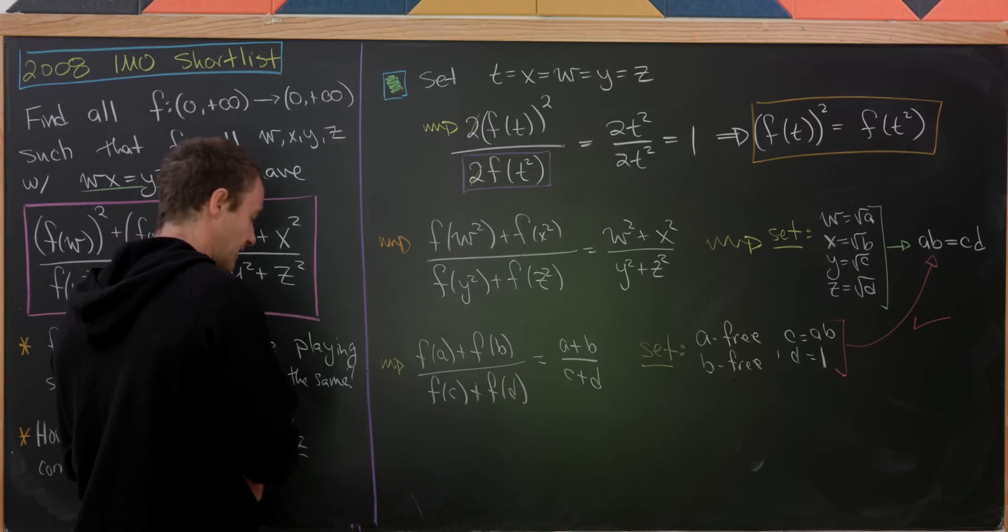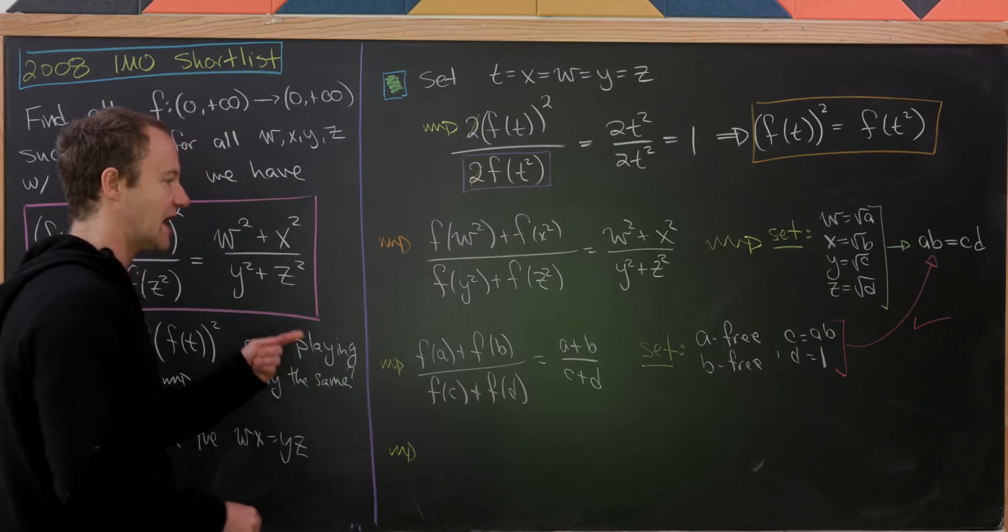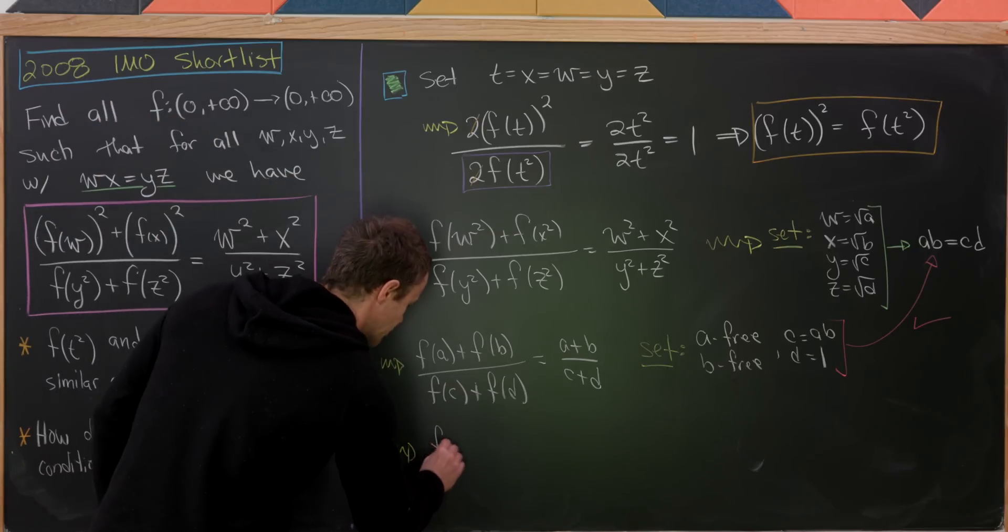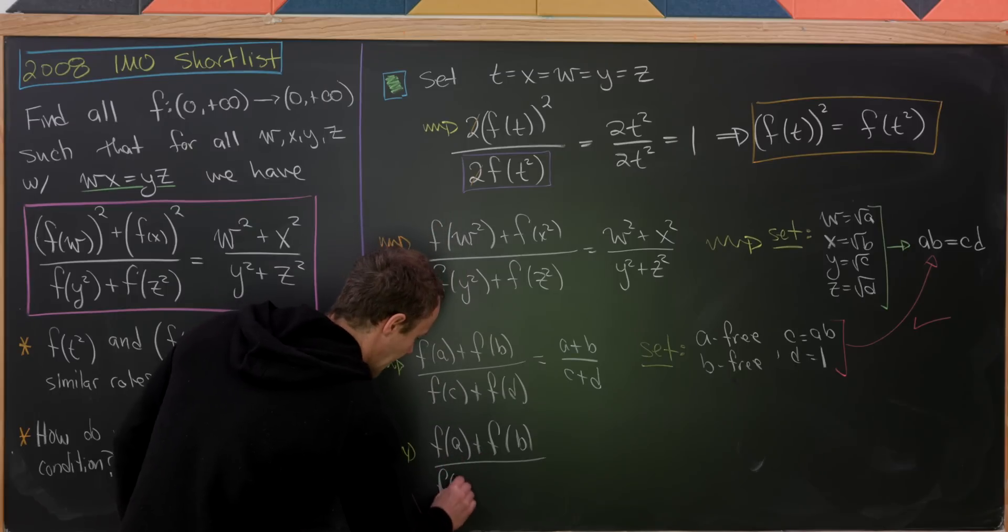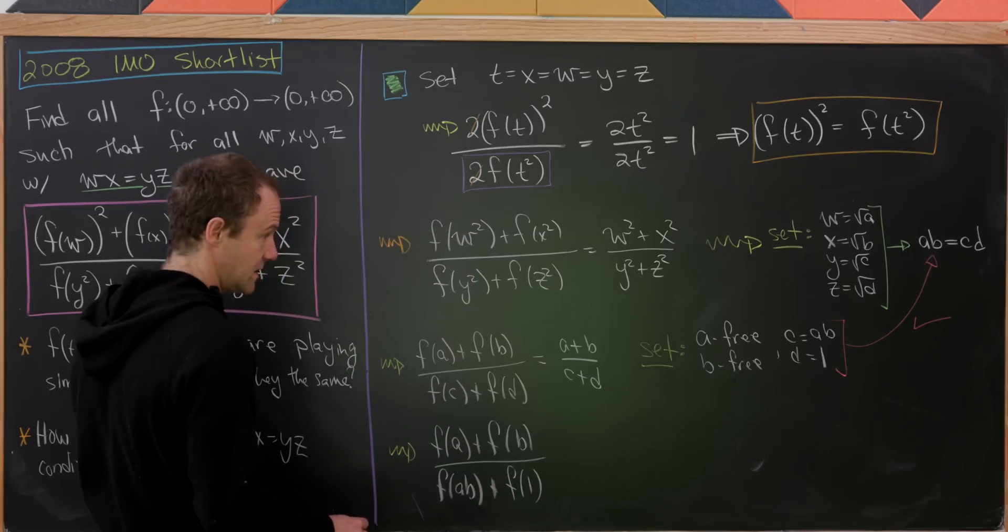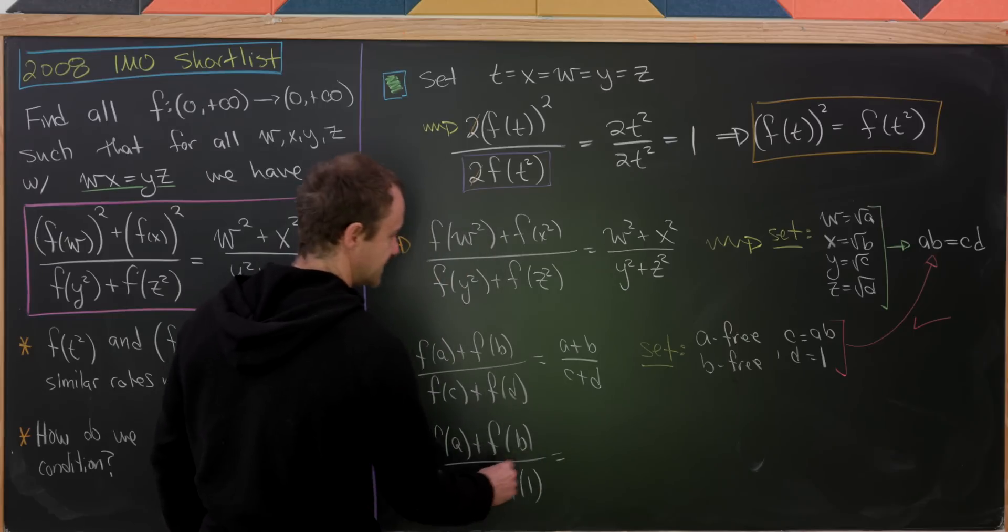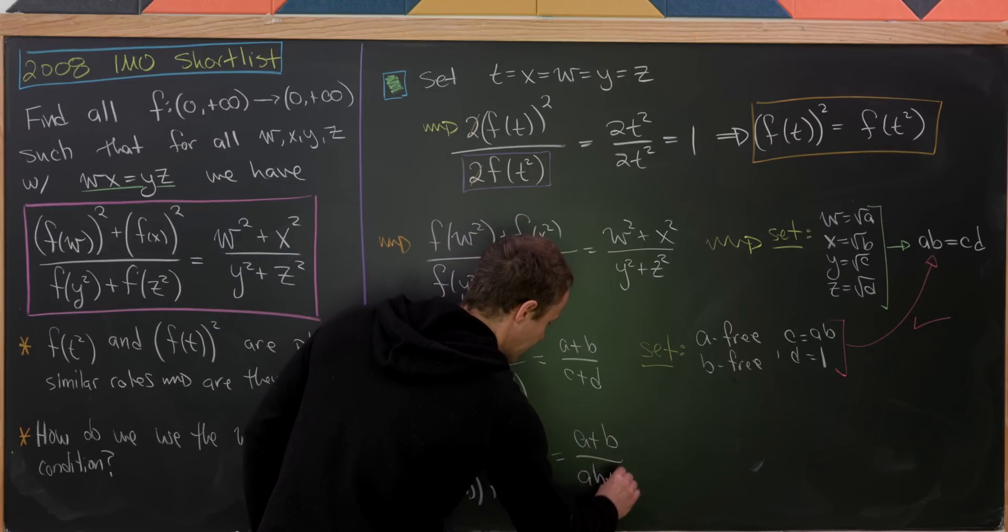So let's see what that leaves us with. So like I said, a and b are free, so we won't change those. We have f(a) plus f(b) over f(ab) plus f(1) equals, let's see, we have a plus b over ab plus 1.